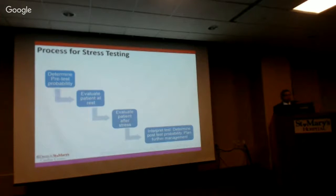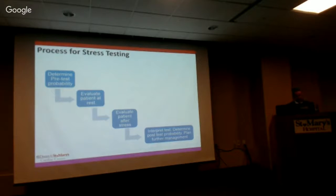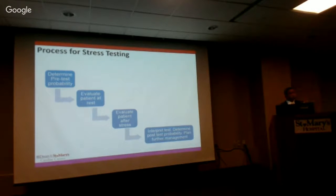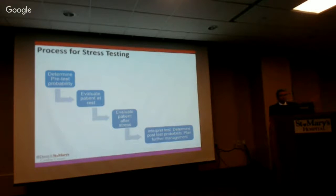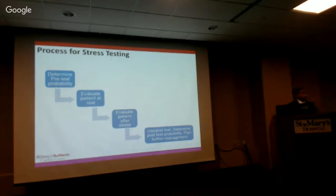Most of the time when we order stress tests, it's primarily to detect CAD and severity of coronary artery disease. The process is stepwise: first determine the pretest probability, then evaluate the patient at rest, then stress them and evaluate after stress using the same modality, look for the difference, interpret the test, determine the post-test probability, and find further management. This process applies to pretty much every test we perform.